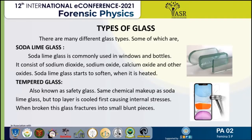The first type is soda lime glass. Soda lime glass is commonly used in windows and bottles. It consists of 70% silicon dioxide, 15% sodium oxide, 10% calcium oxide, and 5% other oxides. The theoretical density for soda lime glass is 2.44 grams per centimeter cubed.